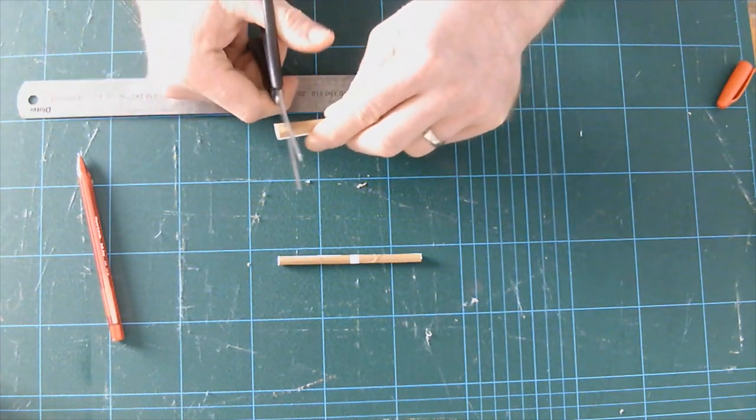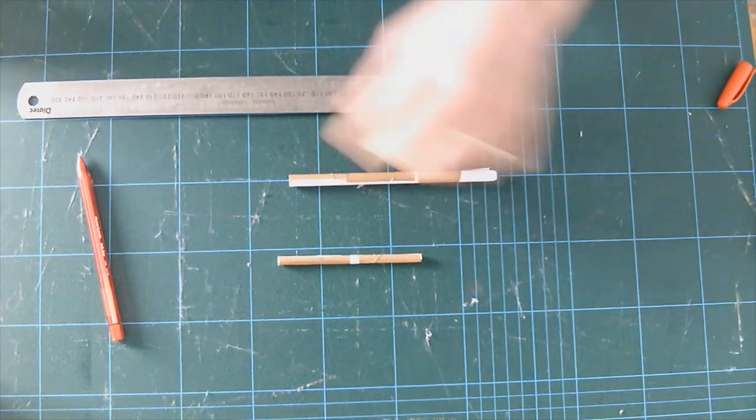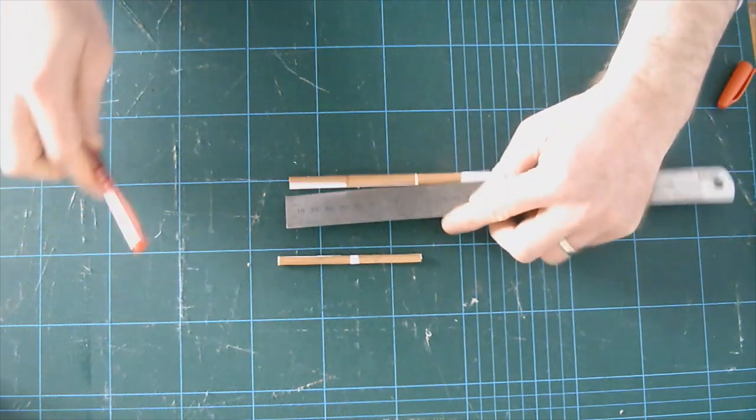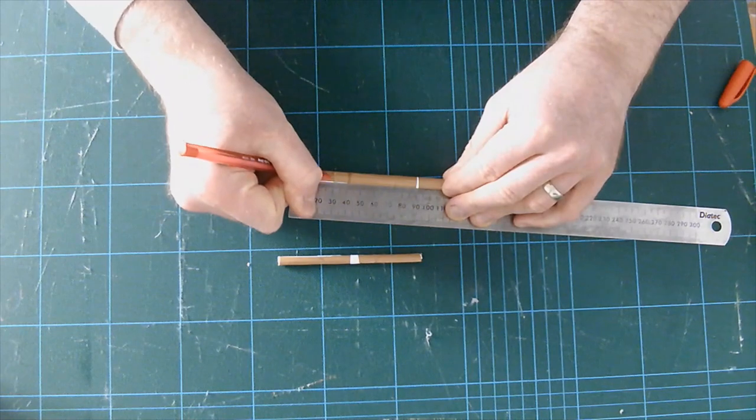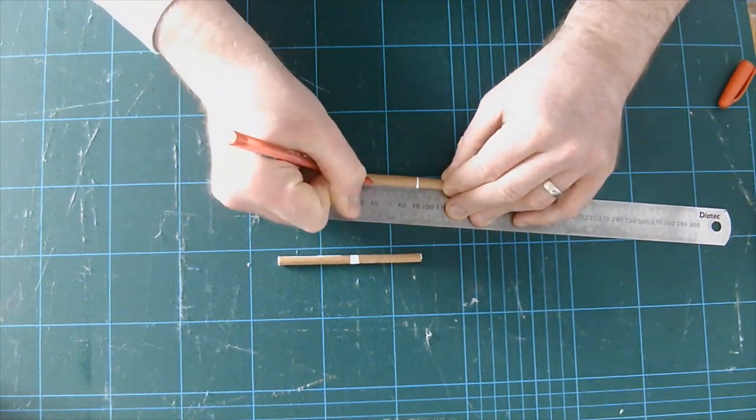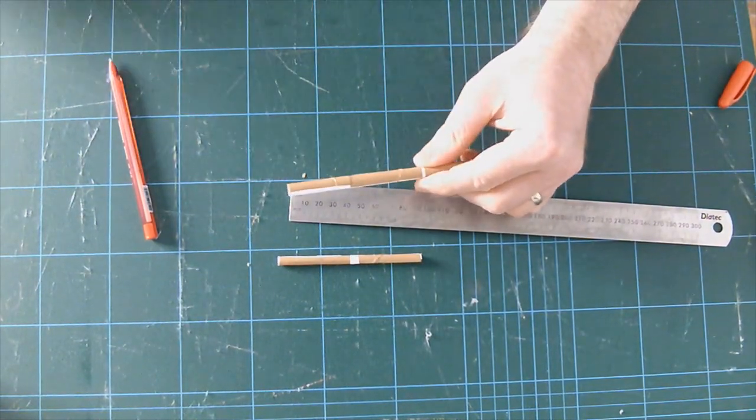I'm going to trim the end just to make sure I've got a good point to start with. There's my zero. I'm going to take my ruler and mark on 30, and I'm going to put another mark at 60. You can see here from this one piece I could probably make two or three hinges.